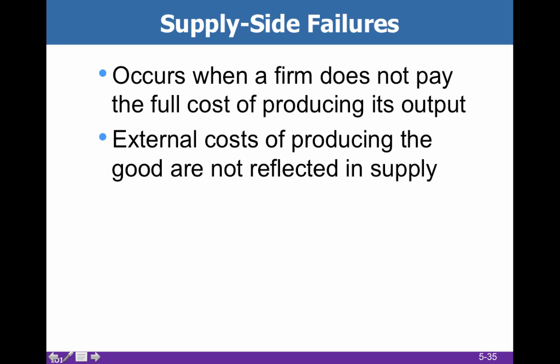The opposite side of that is a supply side failure. This happens when the firm does not pay the full cost of producing its output. The example here is often dumping waste in a river — if I can just take the waste that my business produces and toss it in the river, that is way cheaper for me than to pay for it to be disposed of correctly.